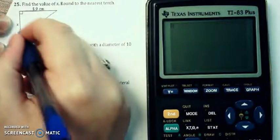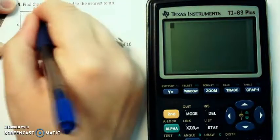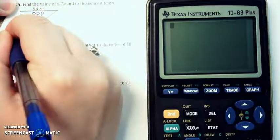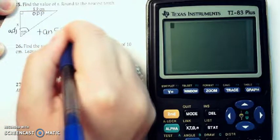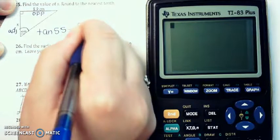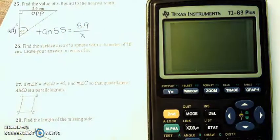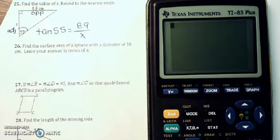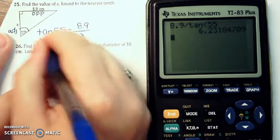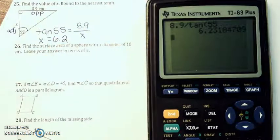For number 25, we have a right triangle, 55-degree angle. The 8.9 is opposite, and the x is adjacent, so I'm going to do tangent of 55 equals 8.9 over x. And again, we did a similar question a second ago. If the variable is on the bottom, these trade places. So I'm going to do 8.9 divided by the tangent of 55 to get my answer here, which is about 6.2 to the nearest tenth.